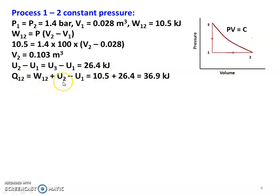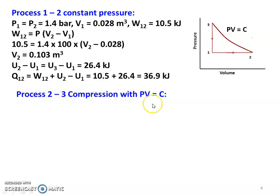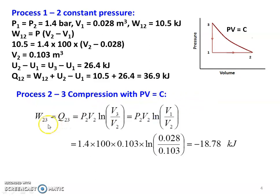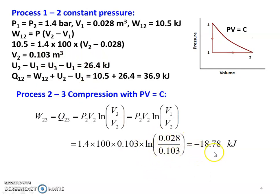Heat transfer Q12 equals W12 plus (U2 minus U1), so 10.5 plus 26.4 equals 36.9 kilojoules. For process 2 to 3, compression with PV equal to constant, work done equals heat transfer equals P2 V2 into logarithm of (V3 by V2), which equals P2 V2 logarithm of (V1 by V2) since V3 equals V1. Substituting: 1.4 into 100 into 0.103 into logarithm of (0.028 divided by 0.103) equals minus 18.78 kilojoules.